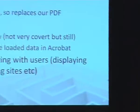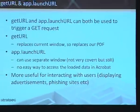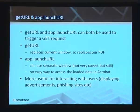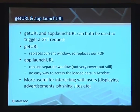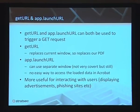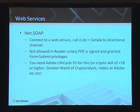Two other main functions within PDF for making HTTP requests are getURL and app.launchURL. getURL basically replaces the current window, which is pretty much out since we lose our looping PDF. app.launchURL is a bit nicer — we can open a new frame, but it pops up to the user and although you could make it disappear, the user will see it. It's not really very covert. Ideally we want something that makes a silent request back and forth. These are more useful for the last part of the attack when we're trying to interact with users — like pop-up phishing sites, that sort of thing.